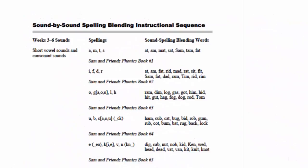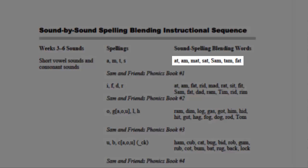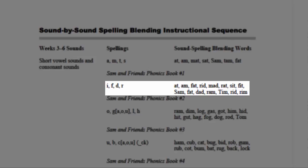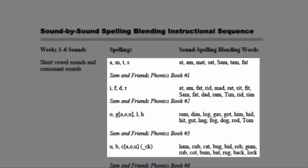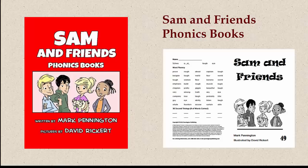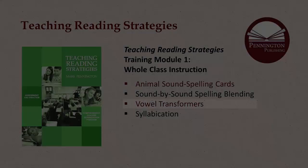On the first three days of each week, begin the class by blending two or three words from the previous day's blending activity, then introduce the spellings and practice the sound-spelling blending words from one set of the sound-by-sound spelling blending instructional sequence. Review all three sound-spelling sets on the remaining day or days of that week — that is, Thursday and/or Friday. The 54 Sam & Friends phonics books correspond to the instructional sequence and should be assigned as homework — three books per week — to reinforce the sound spellings introduced each week. If additional class time is available, teachers may also use these books in class, especially if an instructional aide or parent volunteers are available.